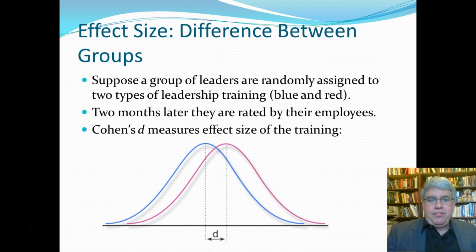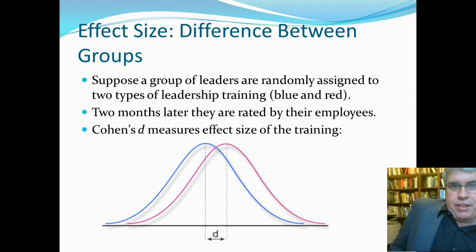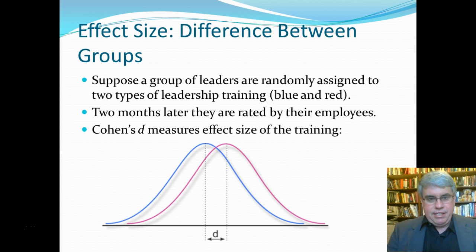Now a second type of effect size can be looking at the difference between two groups. Suppose that we've got a group of leaders and they're randomly assigned to be in two different types of leadership training. So there's no difference between the initial two groups, they're just randomly chosen to be in one group or another, so one group's not better than the other beyond what chance would dictate. Several months later we look at how they're rated by their employees.